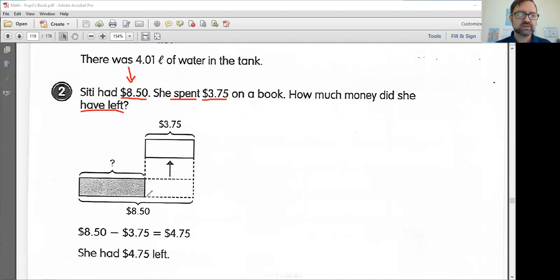So here, once again, they have given you a really nice model here or a diagram. We start with $8.50. Here's our $3.75. And it looks as though we are doing subtraction. $8.50 minus $3.75, we're going to end up with $4.75.